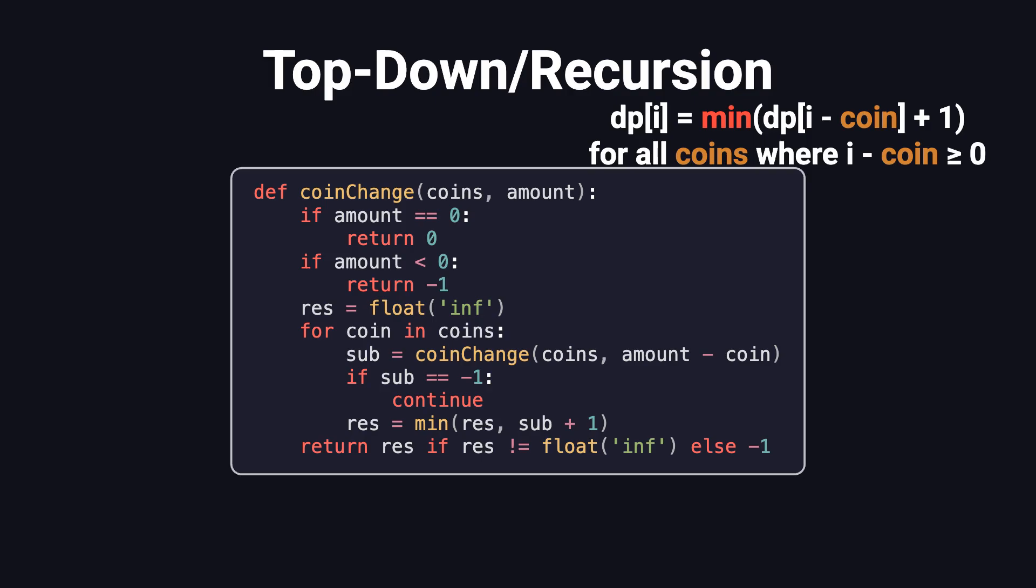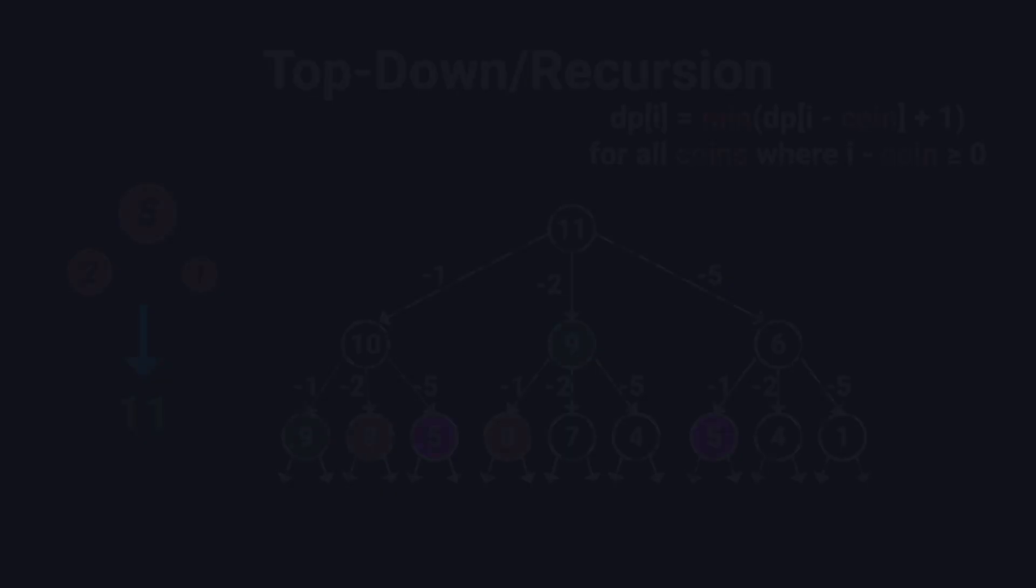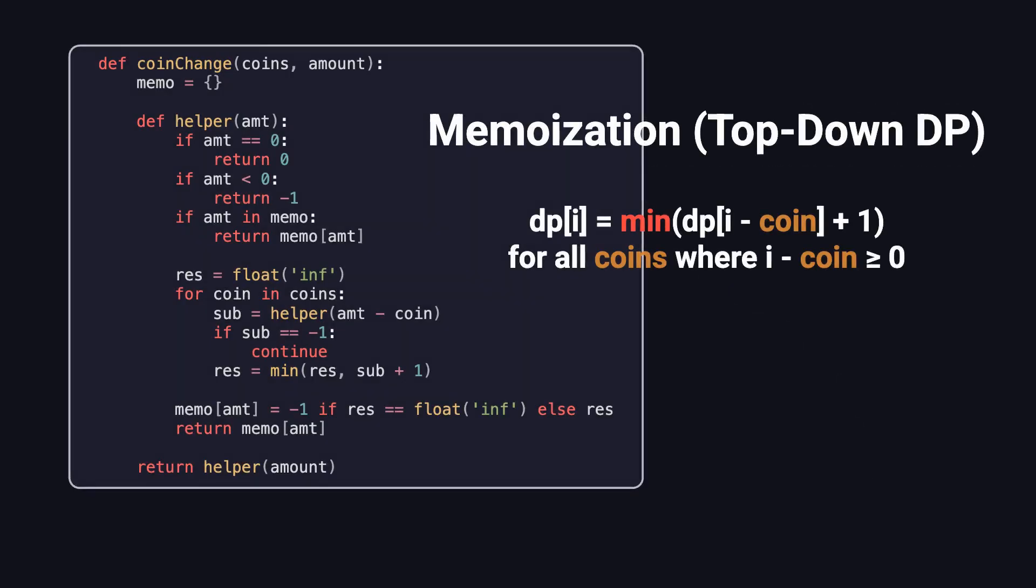This approach is clean and intuitive, but it has one big drawback. It keeps recalculating the same sub-problems over and over again. For example, you might end up solving for 9, 8, or 5 more than once. To fix that, we can use a classic DP trick: memoization.